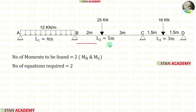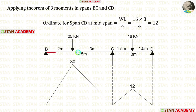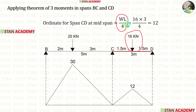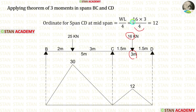Now let us take spans BC and CD and make the second equation. For BC, we have already calculated the ordinate. Now let us calculate the ordinate for CD. In CD, we have a point load acting at the center. The formula for maximum bending moment is WL/4. Here W is 16 and L is 3. Applying the values, we get 12.